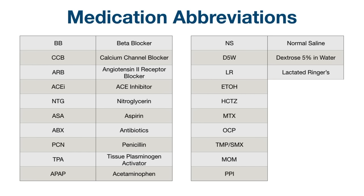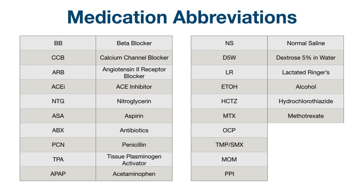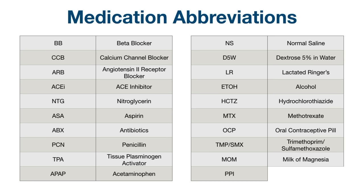LR: lactated ringers. ETOH: alcohol. HCTZ: hydrochlorothiazide. MTX: methotrexate. OCP: oral contraceptive pill. TMP-SMX: trimethoprim sulfamethoxazole. MOM: milk of magnesia. PPI: proton pump inhibitor.